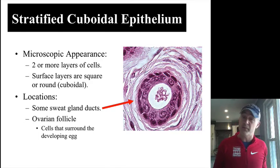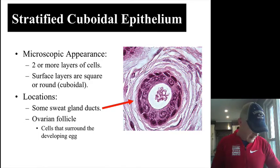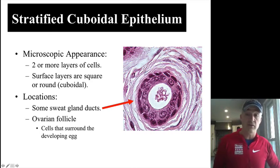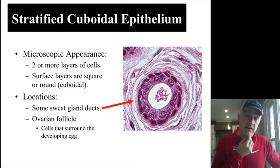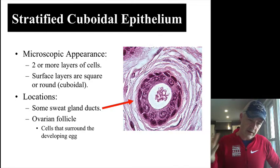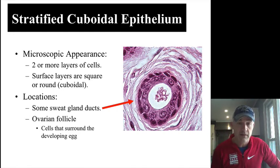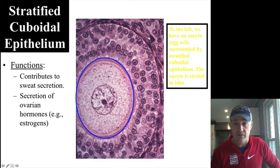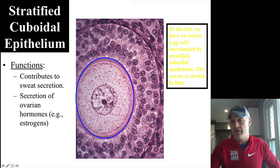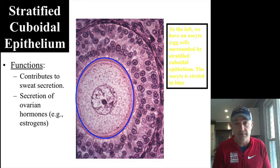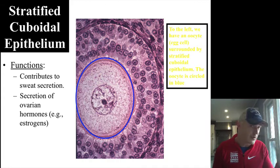Stratified cuboidal is not seen in many places. It's mainly found in sweat glands and ovarian follicles. The bottom layer looks a bit flatter, but the apical surface is cuboidal. A sweat duct in the dermis shows this type clearly. In the ovarian follicle, you can see the egg cell surrounded by layers of stratified cuboidal cells from the basement membrane inward. Both of these cases involve secretion — sweat glands secrete sweat, and ovarian follicles secrete the female sex hormones estrogen and progesterone.